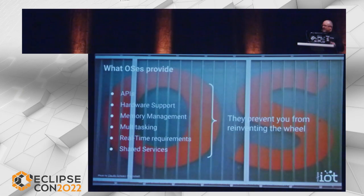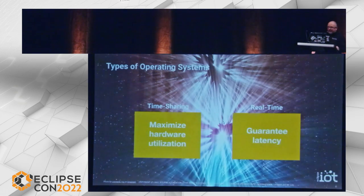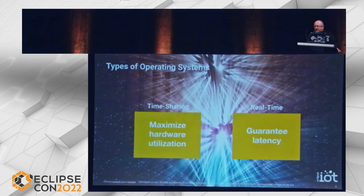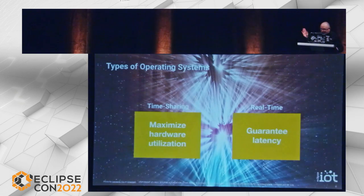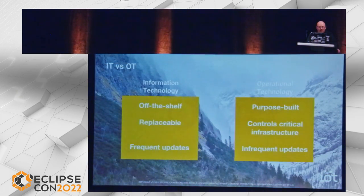There are shared services that OSes provide — printing, cryptography, etc. — which can be implemented separately but are convenient when available as a predictable base set. There are two main types of operating systems: time-sharing versus real-time. On your phone, laptop, or smartwatch you're running a time-sharing OS, which slices and dices your hardware to maximize utilization, run as many tasks in parallel as possible, and provide interactivity. Real-time OSes are about guaranteed latency — that's a really important distinction.